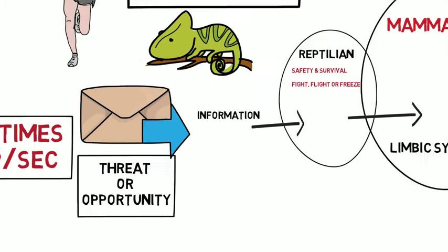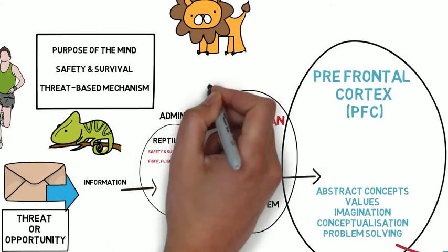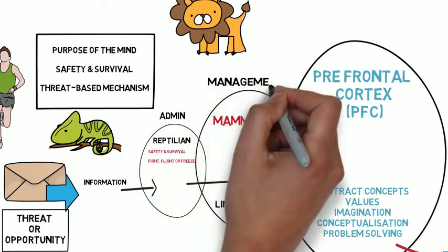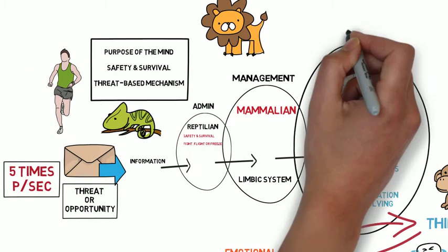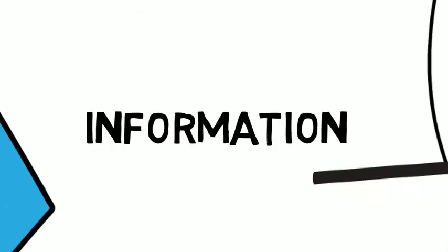Now, if it sees it as an opportunity, it will then pass it through to the mammalian part of the brain. And another way that I like to look at this is the reptilian brain is like your admin for a business, mammalian is like middle management, and your prefrontal cortex is like the CEO.